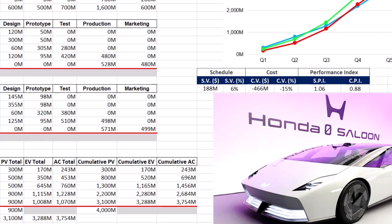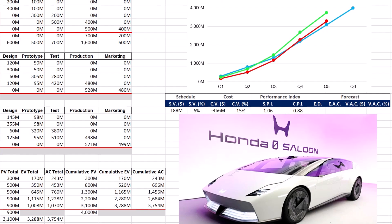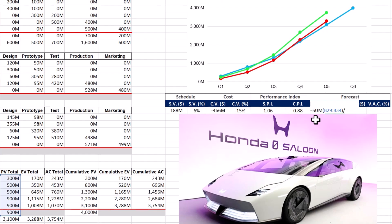Accurate forecasting of future project performance is also possible by using this proactive management method. Project estimate duration or ED predicts the total time of the project at completion based on current performance, helping project managers understand if the project is likely to stay within the original schedule. ED is calculated by dividing the planned duration of 6 quarters by the SPI. In the Honda Zero Series, the project is estimated to finish at 5.7 quarters, which is shorter than the initial plans. Estimated at completion or EAC predicts the total cost at completion and is calculated by dividing the sum of planned values over 6 quarters by the CPI — in the Honda Zero Series, EAC is $4,567 million, indicating cost overrun risks.